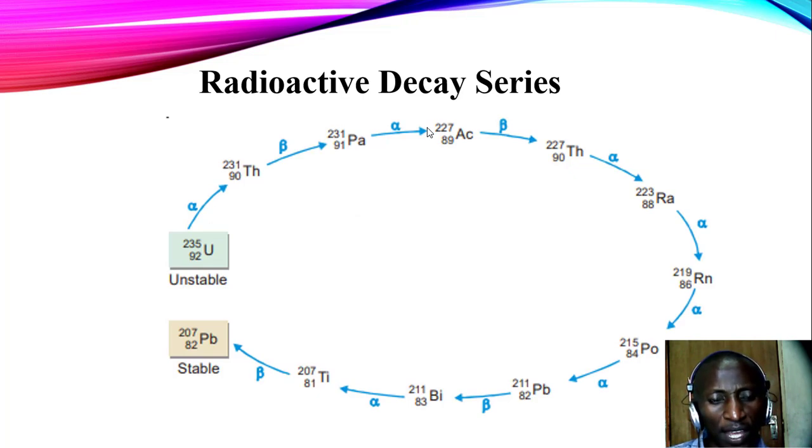In the diagram that we have there, I have shown the radioactive decay series. If we look at the start of it all, you find uranium-235 decays to thorium-231 by releasing an alpha particle. The thorium decays further to give protactinium-231 by the thorium releasing a beta particle. And this goes on and on until we are able to have that full decay series whereby we have the stable lead 207-82 being released.